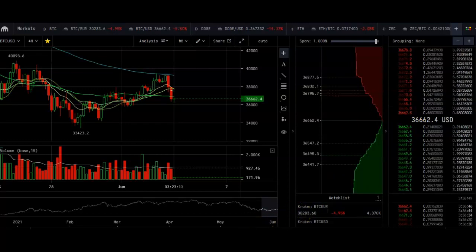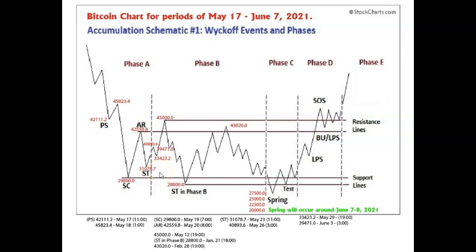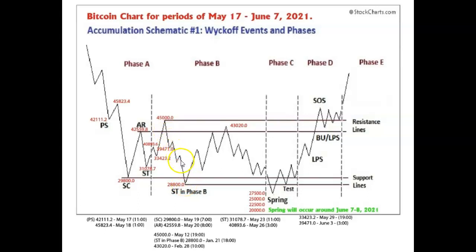Let's go look at Bitcoin's chart real quick. These charts are getting old to look at, but we came to that preliminary support, came out to SC, came back up to the automatic rally, went back down to the secondary test — that was the selling climax, excuse me. Then we came up a little, came back down, came only up. Doge's chart did deviate a little here. We only came up to 39,471 on Bitcoin prior to this descent. We're at 36,000 right now and need to get to 28,800 in this downward trend to hit ST in Phase B.